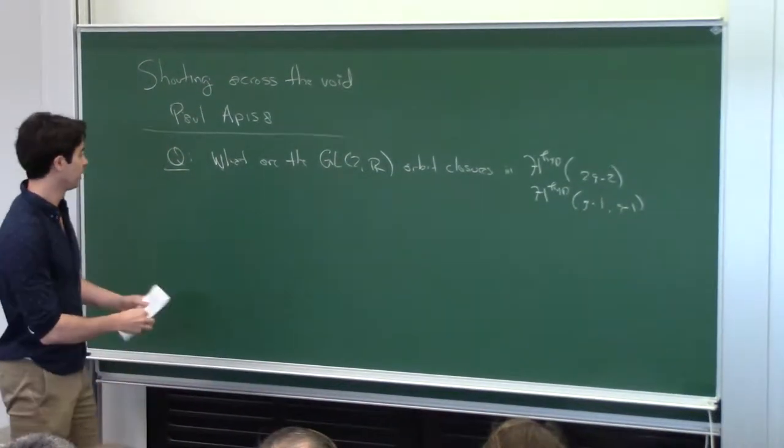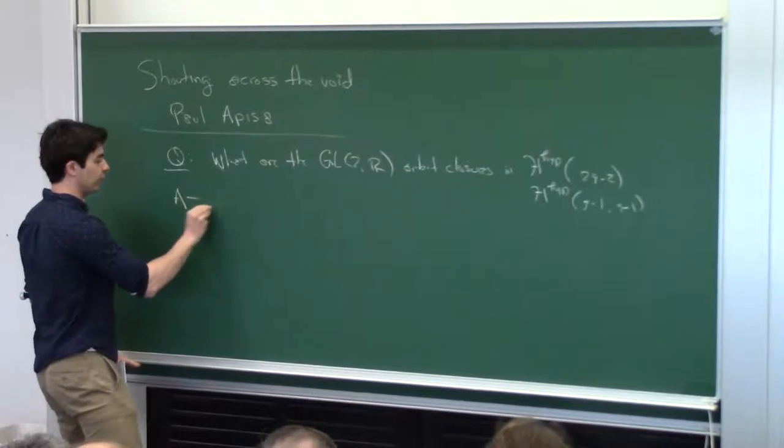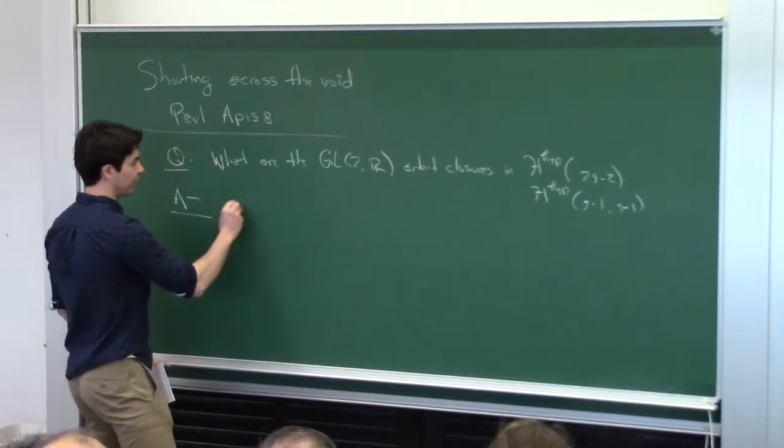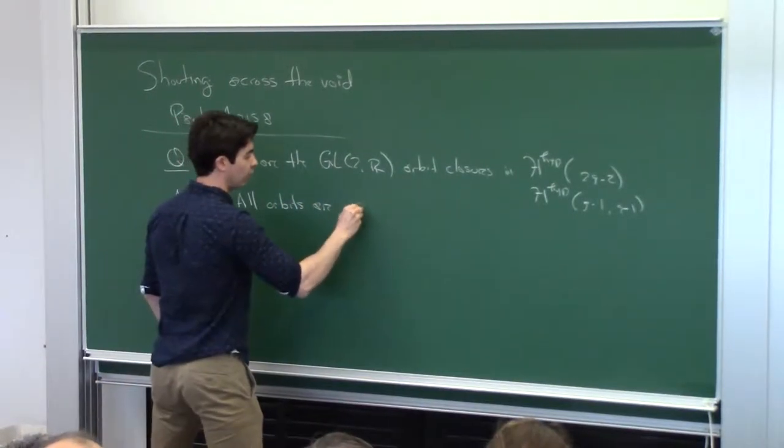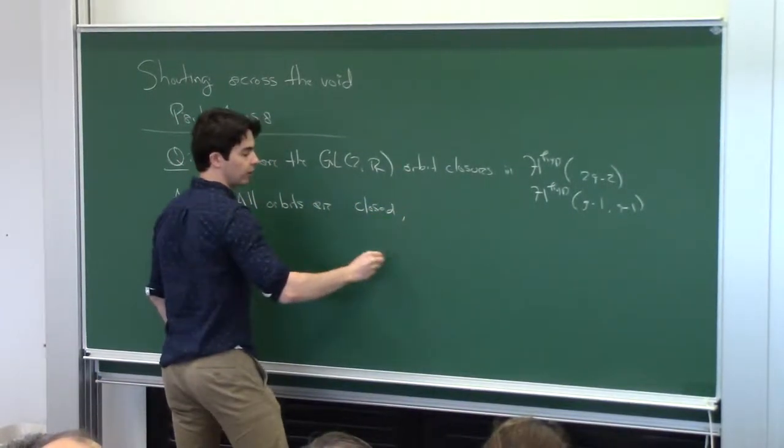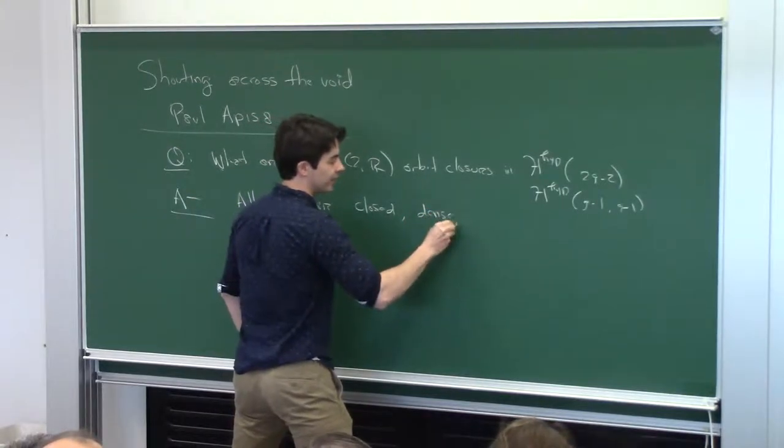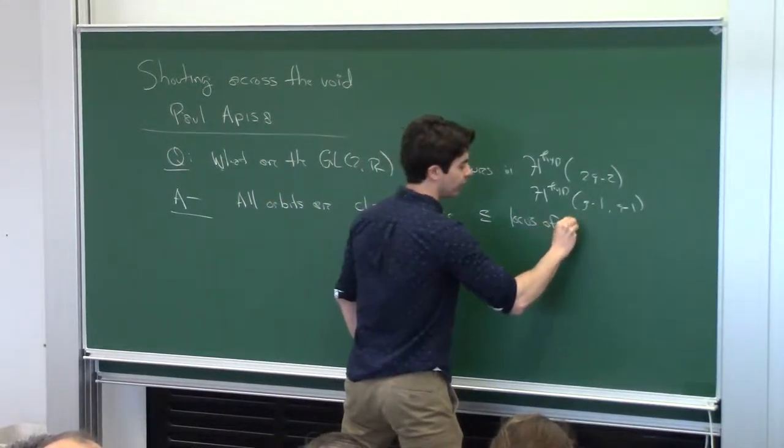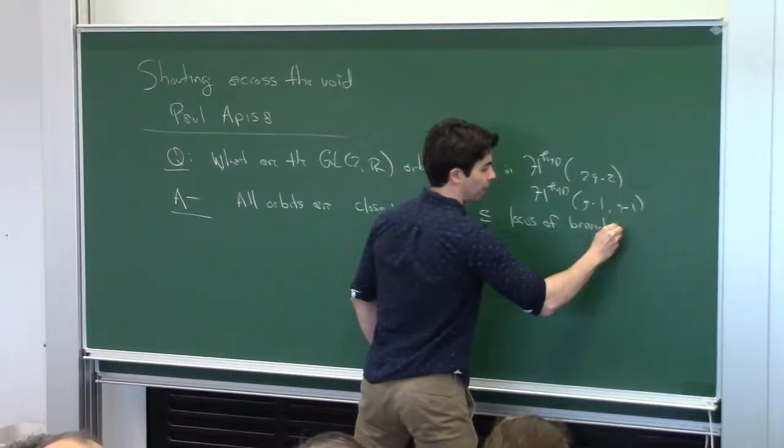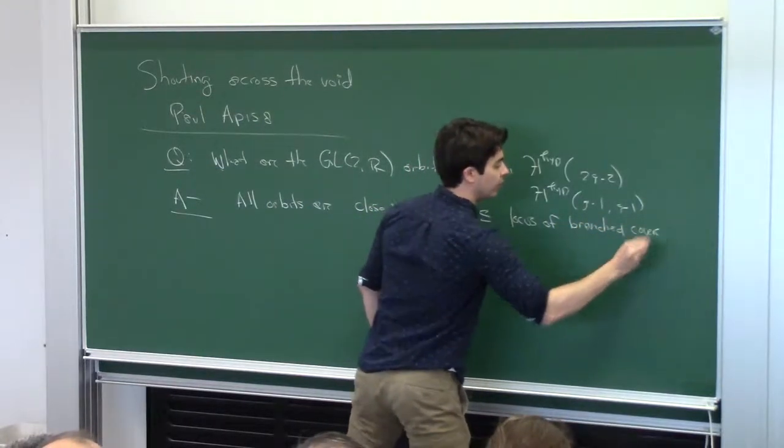And so the answer, which I'll just write down right now, is the following. All orbits are one of the following: they're closed, they're dense, or they're contained in a locus of branch covers.